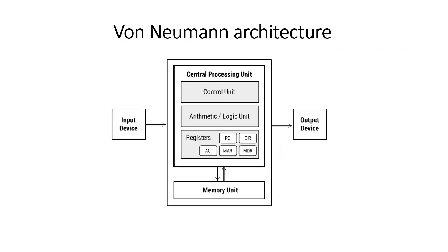This is the von Neumann architecture, which has the central processing unit containing the control unit, arithmetic logical unit, and registers, along with the memory unit and input and output devices. You can see how these are interconnected.